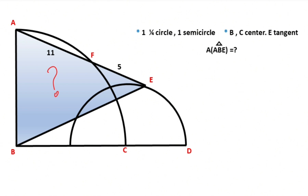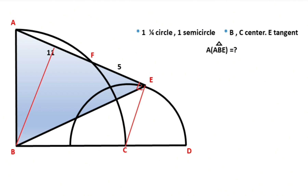First of all, if we connect these two points, you know that here is 90 degrees because of the tangent. Let's draw one perpendicular line from the center onto the chord like this. You know that the chord will be divided into two equal parts, so these two parts must each equal 5.5. After that, let's draw one more perpendicular line like this.